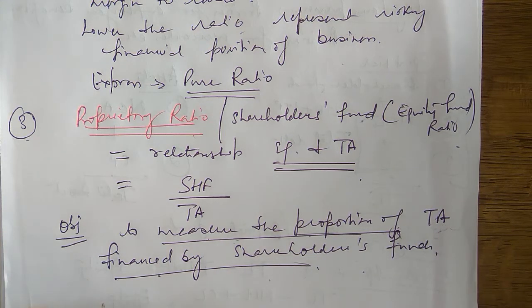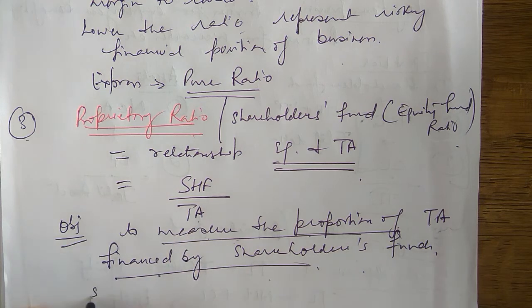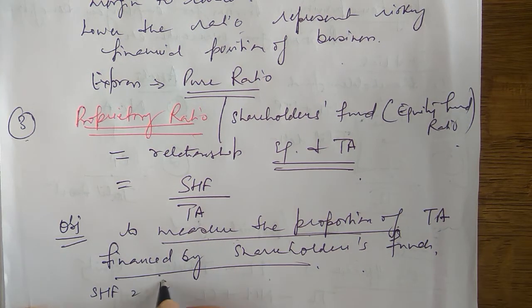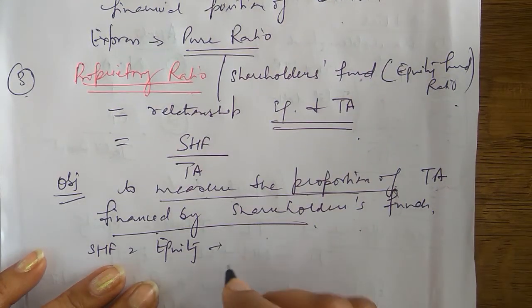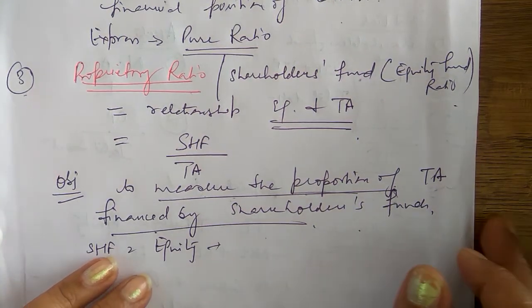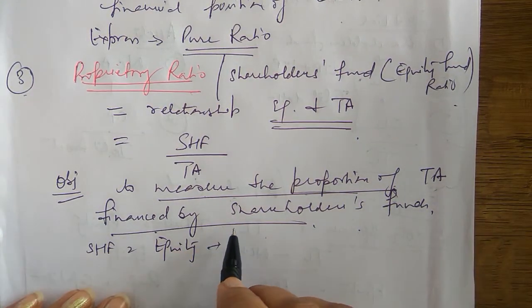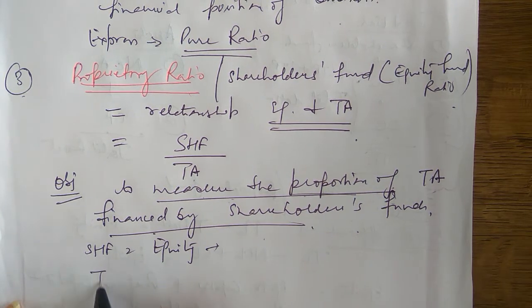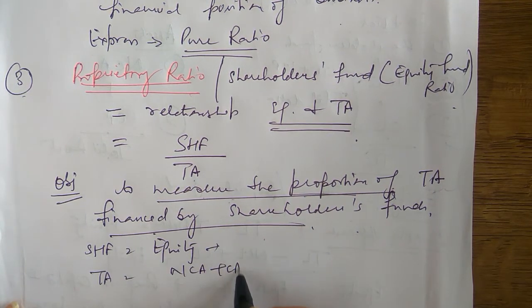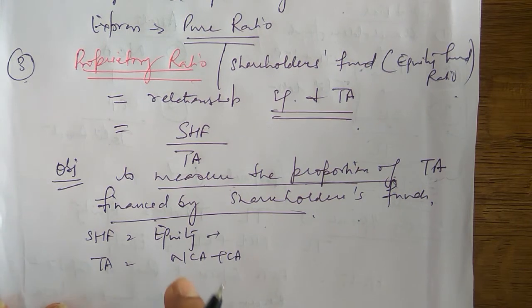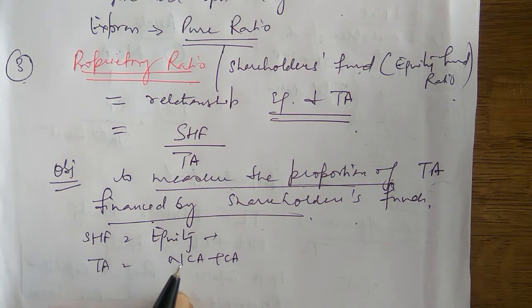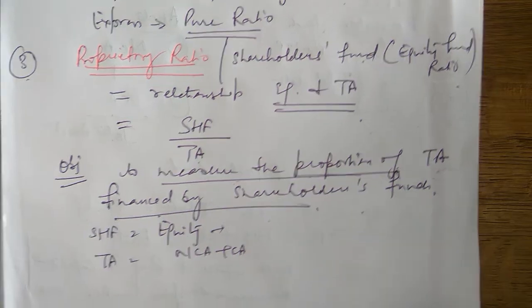Shareholders fund is equity only — same as discussed in the debt equity ratio, where we covered both the liability approach and asset approach. Total assets equals non-current assets plus current assets. Using these values, we calculate the proprietary ratio.